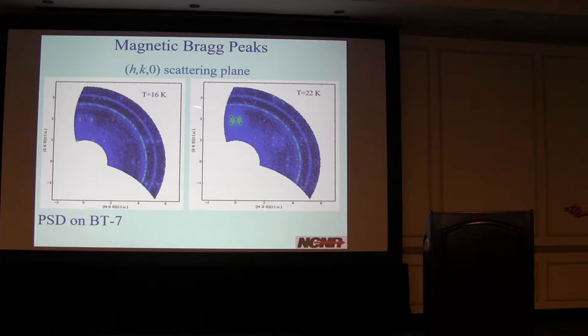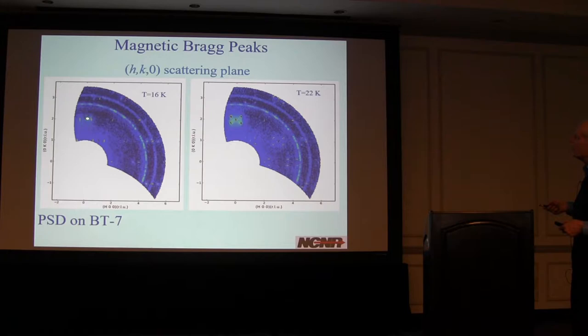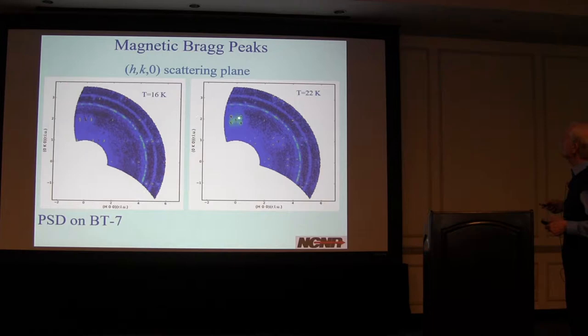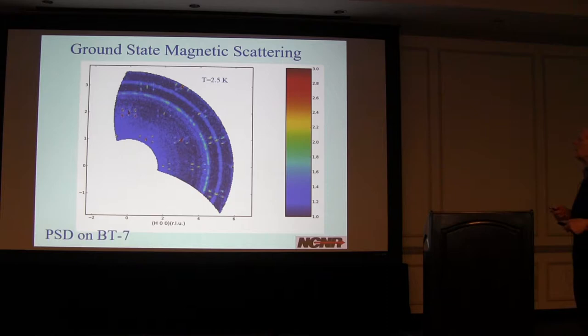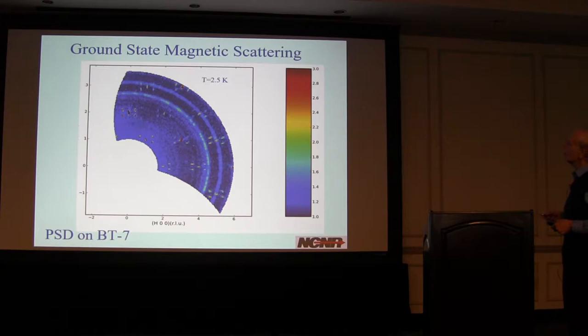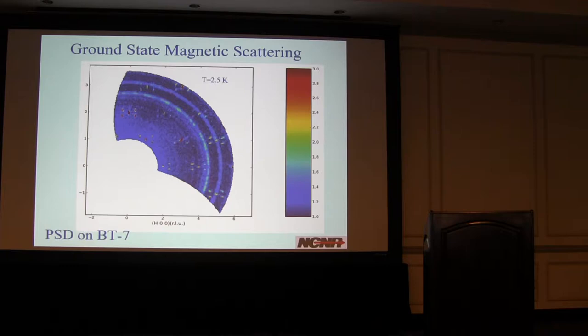When you go down from 22 to 16 Kelvin—above the transition at 15 Kelvin—we got a slightly different pattern. On top of this particular structural peak, there's an extra magnetic signal: a commensurate magnetic order has developed. These two peaks have now collapsed along the k-direction into one single peak. When you cool down a bit lower, you get another surprise—those incommensurate peaks pop back out again. In the ground state, you have four incommensurate peaks in the H-K scattering plane in addition to commensurate magnetic order—two different kinds of magnetic order.